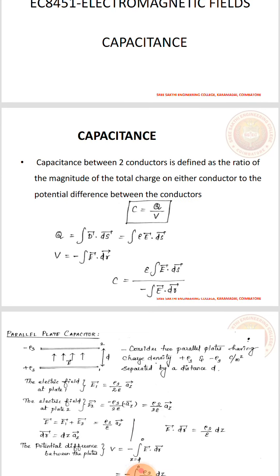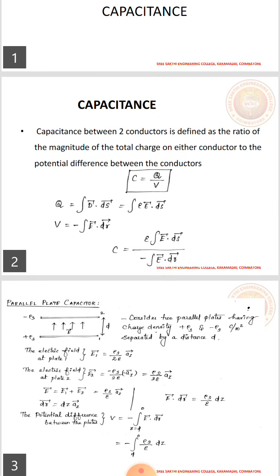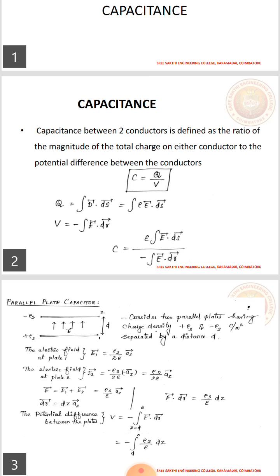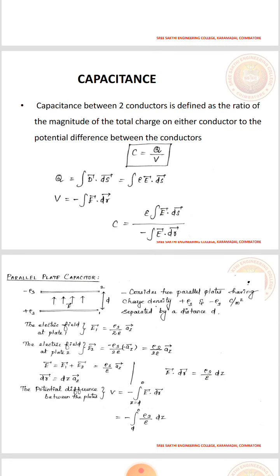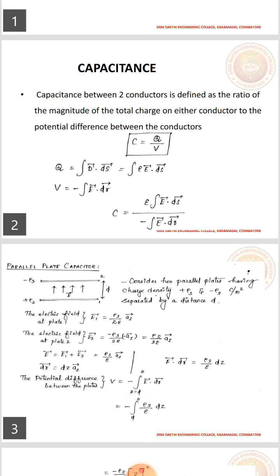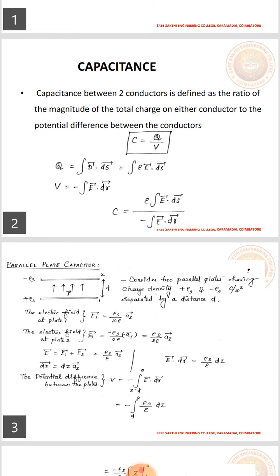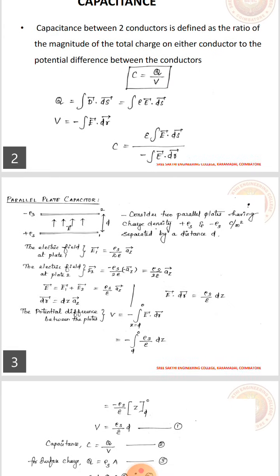By Gauss's law, the total charge is given by Q is equal to integral of D vector dot dS vector. We know D vector equals epsilon into E vector, so the equation becomes integral of epsilon E vector dot dS vector. The potential difference is given by V is equal to minus integral of E vector dot dR vector. Applying these values, capacitance C can be written as epsilon times integral of E vector dot dS vector divided by minus integral of E vector dot dR vector.